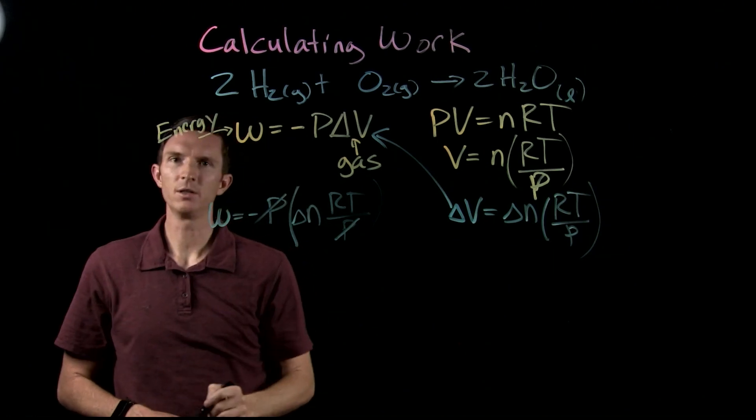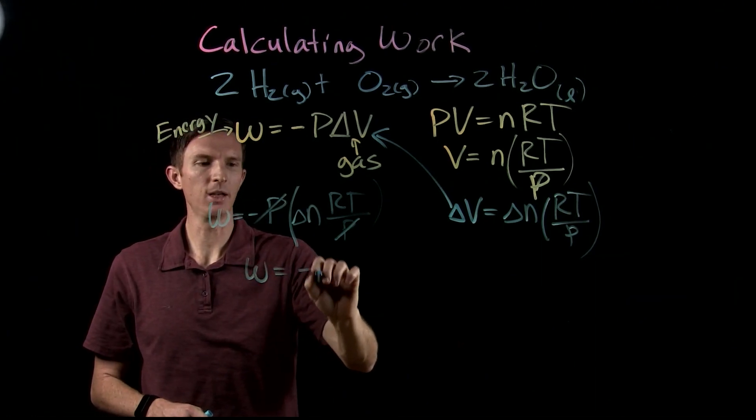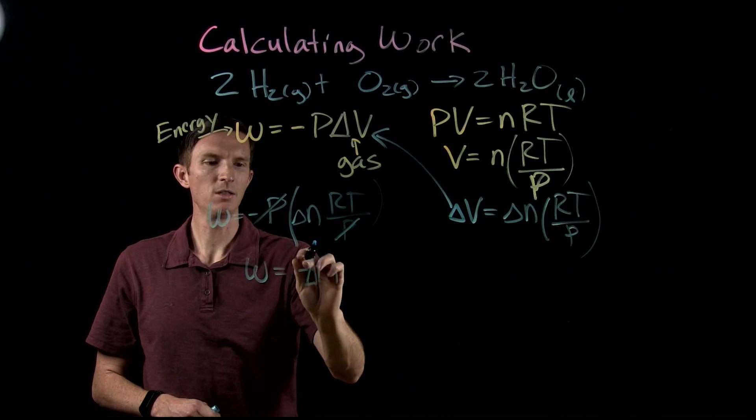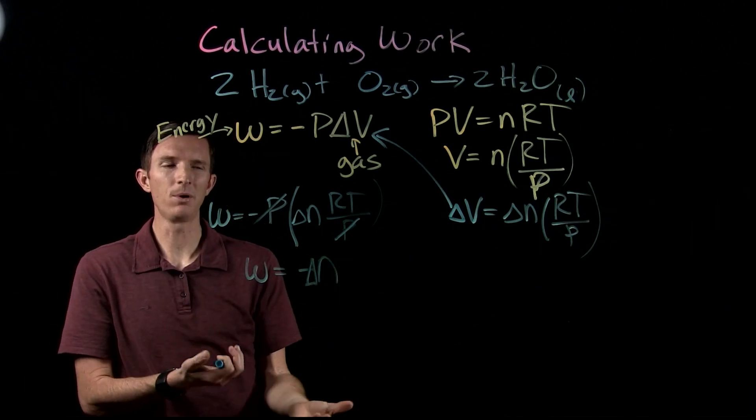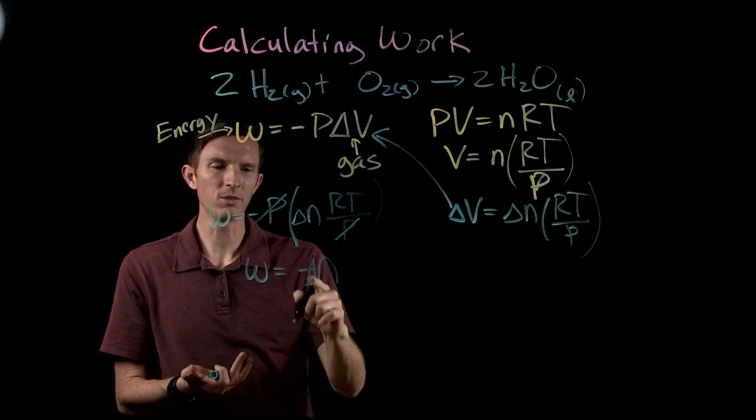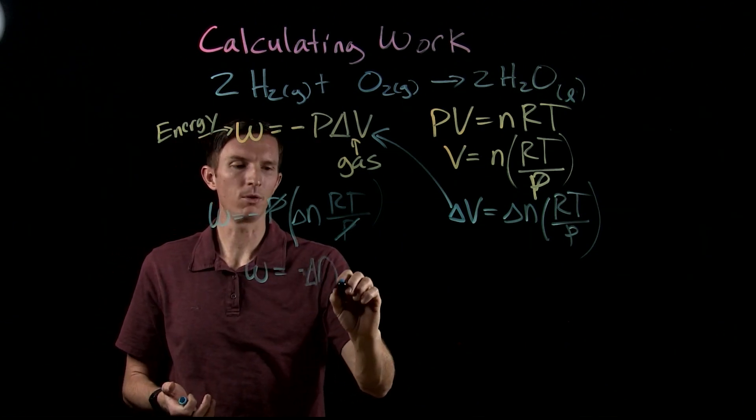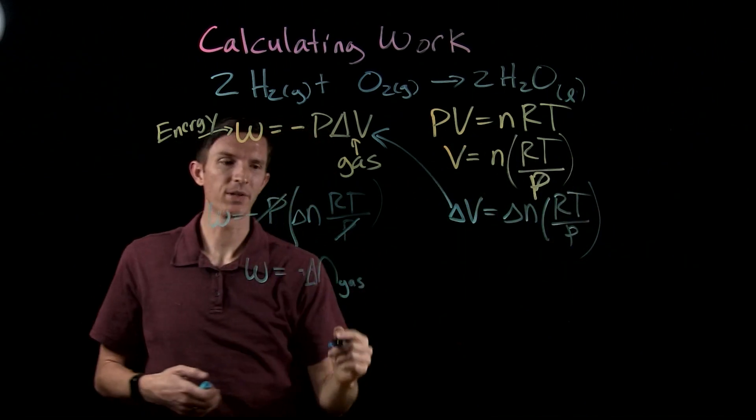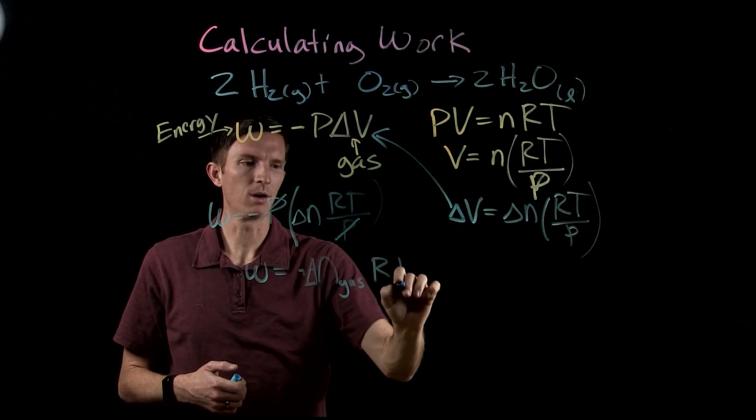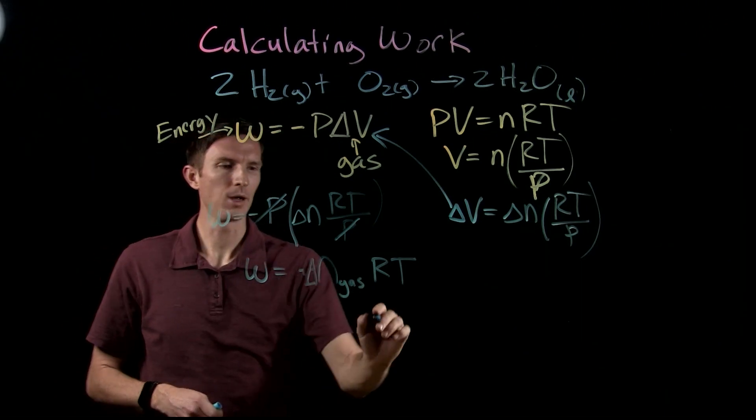So now we have work equals negative pressure, and I'm going to put this expression in here, change in number of moles times R times T over P. So now we see our pressure gets cancelled out, and we end up with work equals negative change in number of moles. Now to be explicit so that we make sure we remember what is this the change in number of moles of, it's the change in the number of moles of our gas molecules, because ideal gas law only applies to gases. And then that would be times R times T.